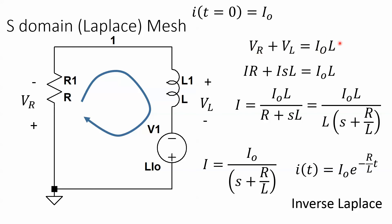So the mesh way, we sum up the voltages V_R plus V_L equals the initial condition. We put it all in the s domain, solve for I, we get this equation which the L's cancel and you just look up the inverse Laplace transform table and we get our exponential decay.